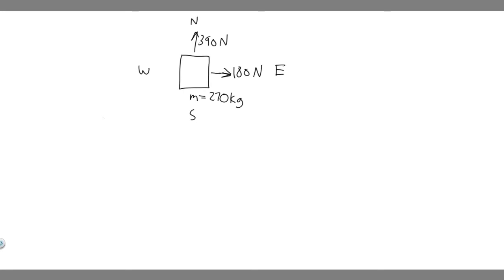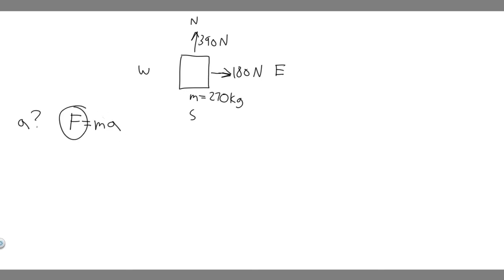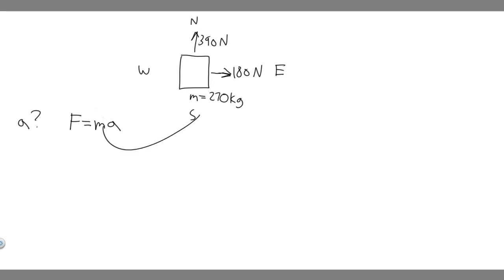In this problem, what we're trying to do is solve for the magnitude and direction of the acceleration. We're given forces and we're given a mass, so what pops in my head is force equals mass times acceleration — F = ma. Since we're given two different forces, one north and one east, we need to take the resultant of these two forces if we want to plug it in and solve for acceleration.